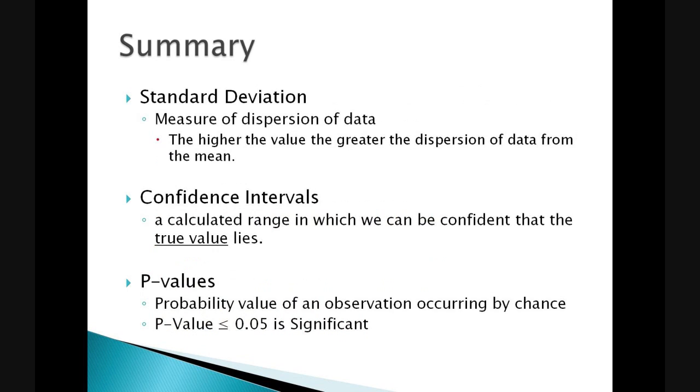In summary, a standard deviation is a measure of the dispersion of data. The higher the value, the greater the dispersion of the data from the mean. The lower the value, the less dispersion of the data. Confidence intervals are a calculated range in which we can be confident that the true value lies, often reported as 95% confidence intervals. And lastly, p-values are probability values that an observation can occur by chance. And we determine that a p-value less than or equal to 0.05 is statistically significant.